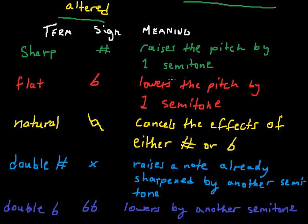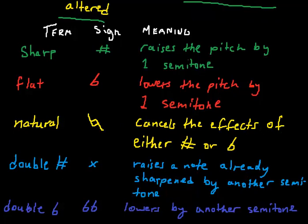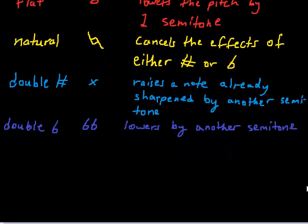But an accidental can come into play where it's just after the clef and right before the time signature. That's what they call the key signature. This also can be altered within a musical piece by more of these signs. But let me show you how that looks.